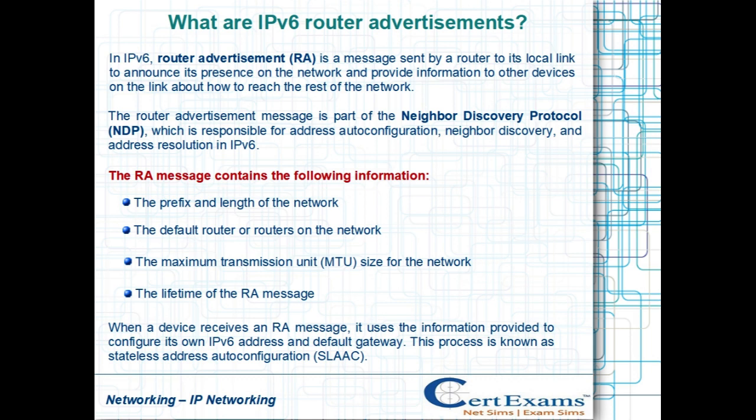The RA message contains the following information: the prefix and length of the network, the default router or routers on the network, the Maximum Transmission Unit (MTU) size for the network, and the lifetime of the RA message.